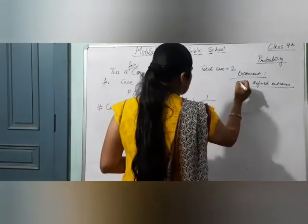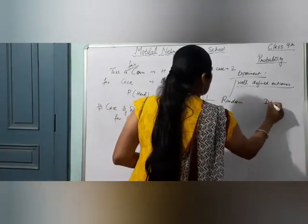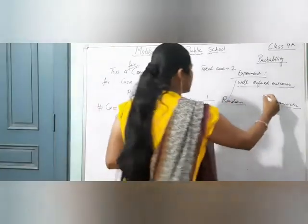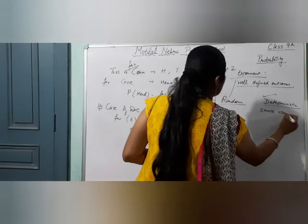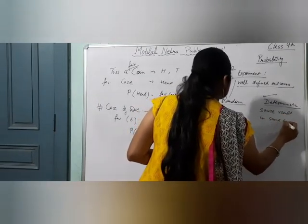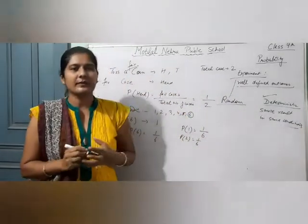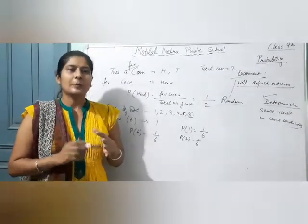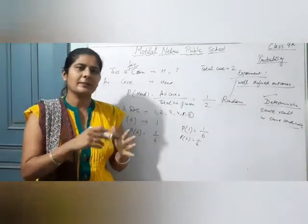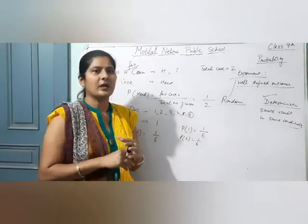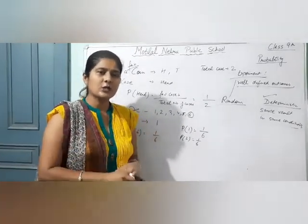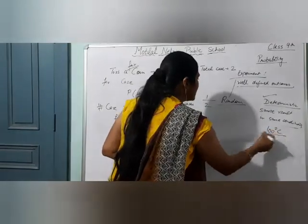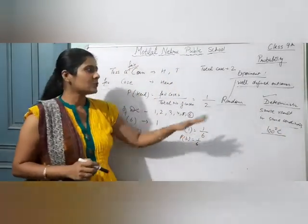Experiment दो type के होते हैं: random experiment और deterministic experiment. Deterministic experiment which gives same result in same conditions. For example, अगर chemistry lab में water का boiling point check करना है, तो same conditions में, चाहे कितनी भी बार करें, हम उसको same conditions में रखें — we will get the same result. तो this will be the deterministic experiment.